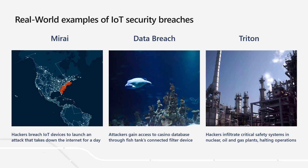Imagine hackers getting access to your corporate data by way of a fish tank. Sounds pretty unbelievable, right? Well, this happened recently to a casino in Las Vegas. The attackers used a vulnerability in an aquarium thermometer to gain a foothold into the casino's network, and once they were in, they found their way to the casino's high roller database, which they pulled out and used to their advantage.